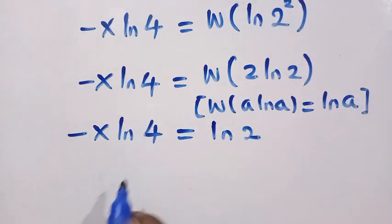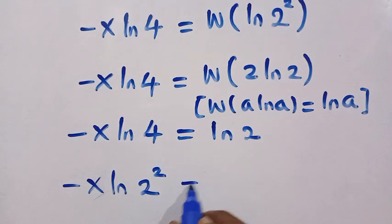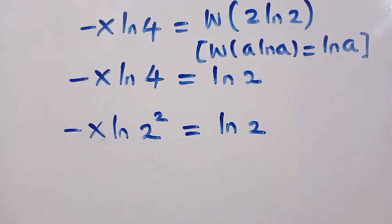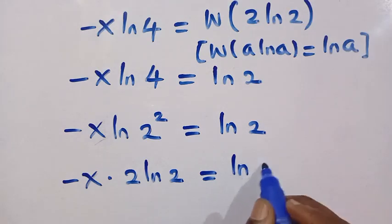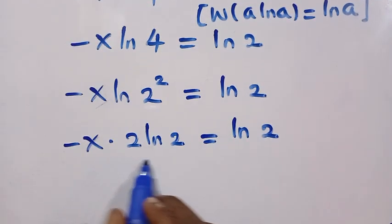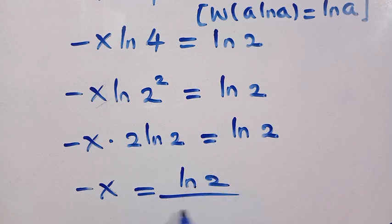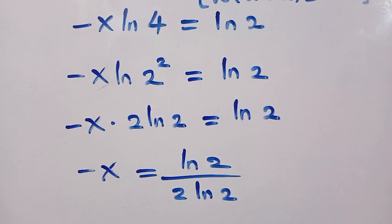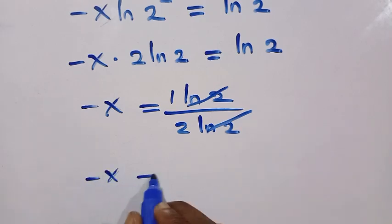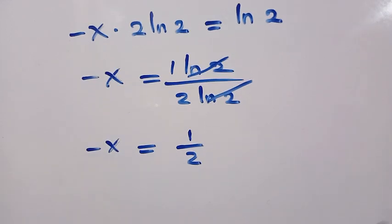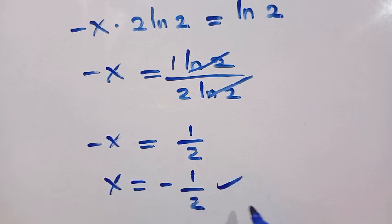Dividing both sides by 2·ln 2, we get minus x equals ln 2 divided by 2·ln 2, which simplifies to minus x equals 1 over 2. Therefore x equals minus 1 over 2, which is our solution.